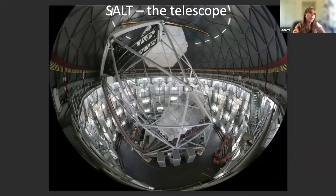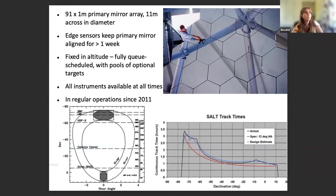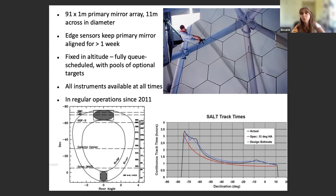The telescope has an 11-meter primary mirror array of 91 segmented one-meter mirrors, held together with edge sensors that keep the primary mirror aligned for over a week — sometimes more than two weeks. The key point about SALT is that it's fixed in altitude, so we have to wait for the Earth to rotate and objects to come into the visibility annulus. This means it's fully queue-scheduled. All instruments on SALT are available at all times — no seasons — and it's been in regular operations since 2011.